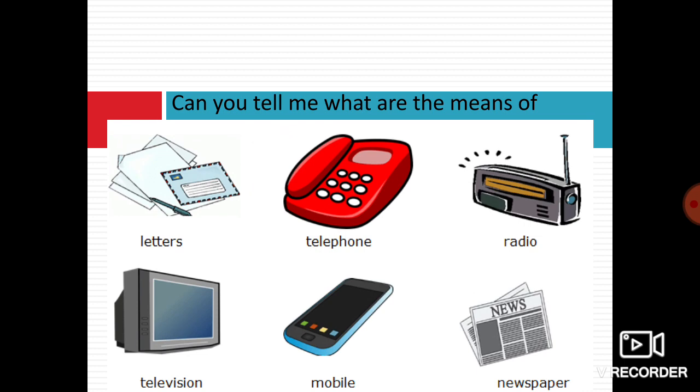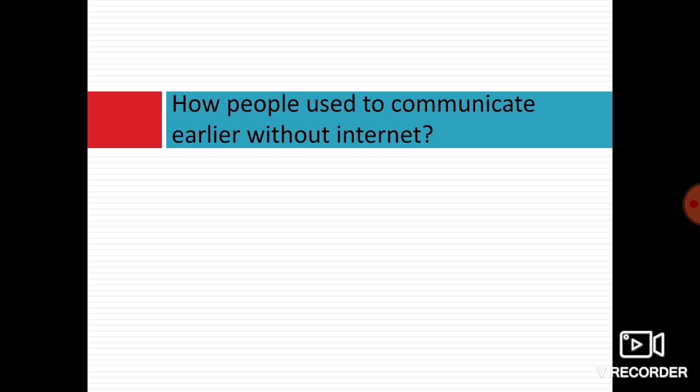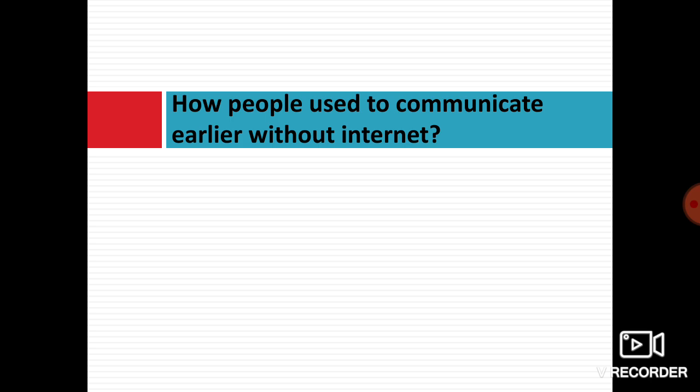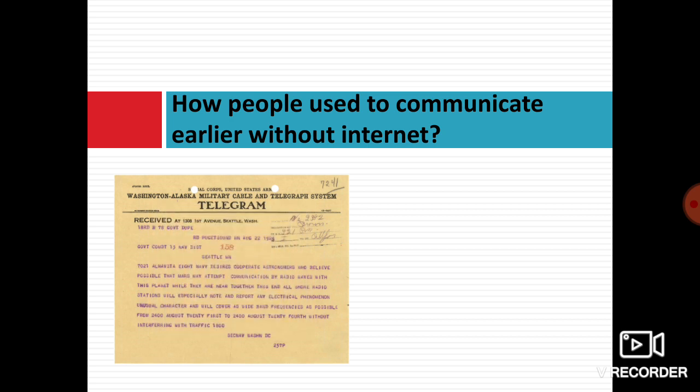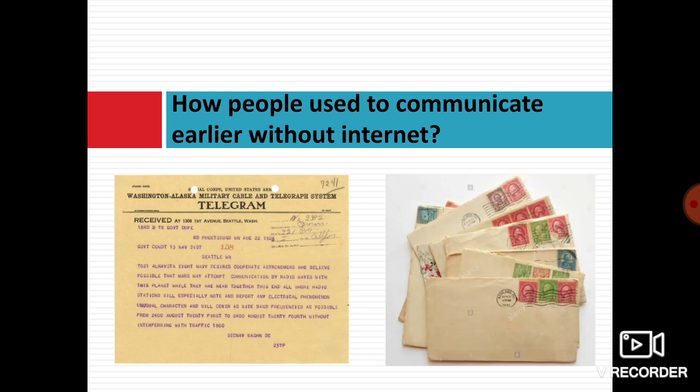How people used to communicate earlier without internet? Today you communicate through WhatsApp, messenger, Instagram, Facebook, and many more. But earlier there was no internet. People used to communicate with telegram, which was a direct letter but a little fast process, and letters. Letters were posted from one person to another. The letters were dropped in the postbox and the postman used to come, collect those letters, and distribute according to the addresses.